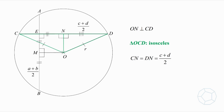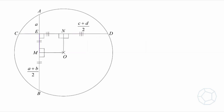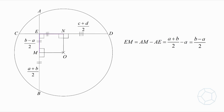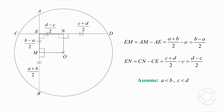Let's figure out the lengths of EM and EN as well. EM is equal to (a + b) / 2 minus a, which is equal to (b - a) / 2. And EN is equal to (c + d) / 2 minus c, which is equal to (d - c) / 2. You see why we have a less than b and c less than d at the beginning — it ensures that EM and EN are positive.